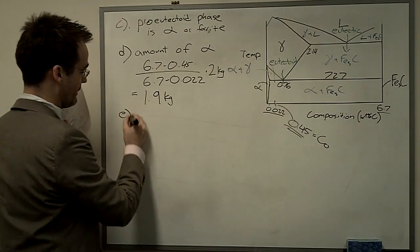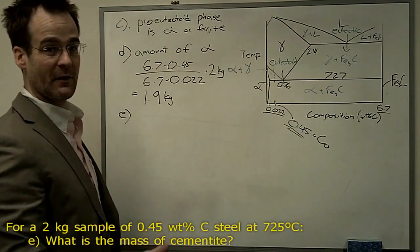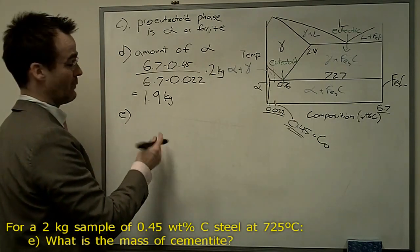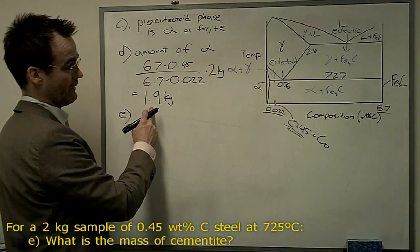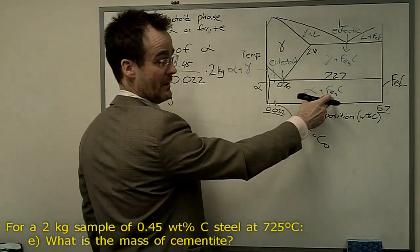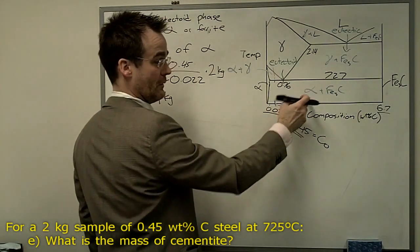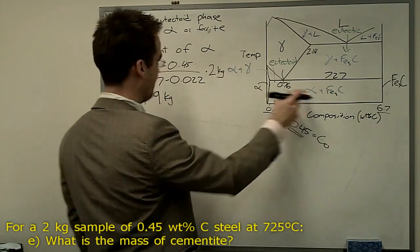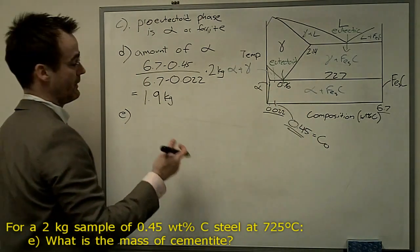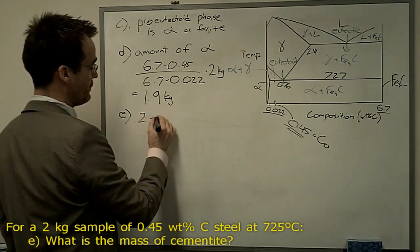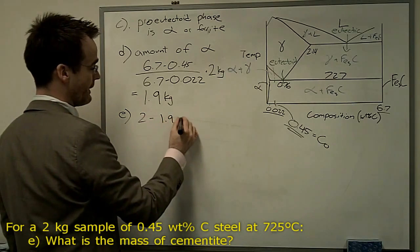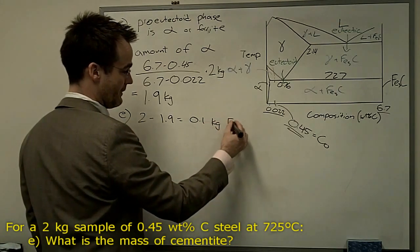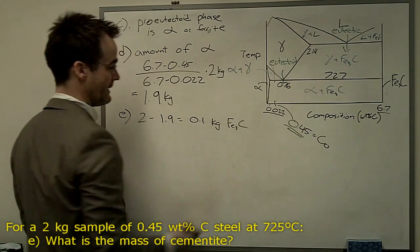And in fact, question E asks us for how much cementite there is. So, two ways you could do that. One, you could say, well, there's only two phases, ferrite plus cementite. If we've just determined that there's 1.9 kilos of ferrite, there has to be 0.1 of cementite. So you can go 2 minus 1.9 equals 0.1 kilograms of Fe3C.